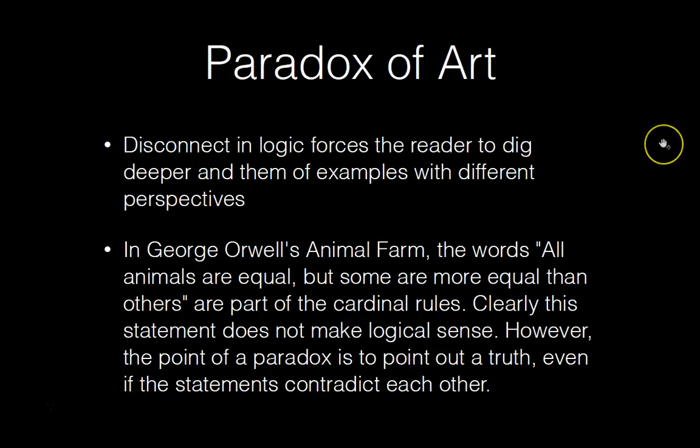If you've read Animal Farm in high school — which is a great book, highly recommend it — the line is: 'All animals are equal, but some animals are more equal than others,' and it's part of their cardinal rules. The statement doesn't make sense: how can all animals be equal but some be more equal? But it points out a truth even if the statements contradict each other, and it has a hidden message.